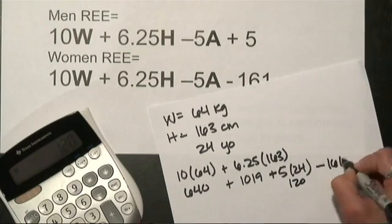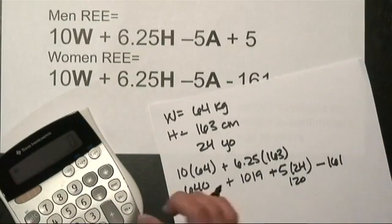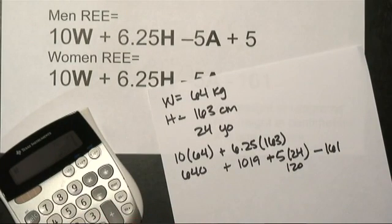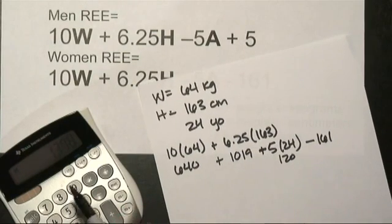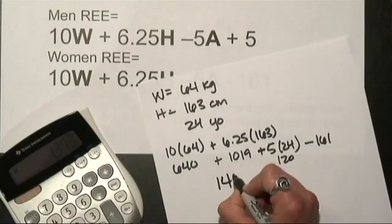Minus the 161. Now to plug this all together, 640, plus 1019, minus 120, minus 161. I come up with just about 1400 calories.